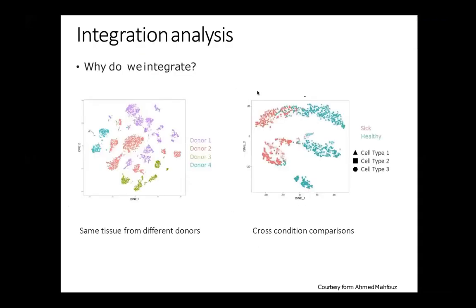So why should we integrate? Here is a picture from a colleague showing what we sometimes see in a dataset where you have several donors or patients and everything clusters together according to the donors, not according to the condition you want to visualize. You don't have cell type one and cell type two clustering together, but clusters made of each donor, within which you can still see sub-clusters representing cell types — but visually it's not appealing for a paper.